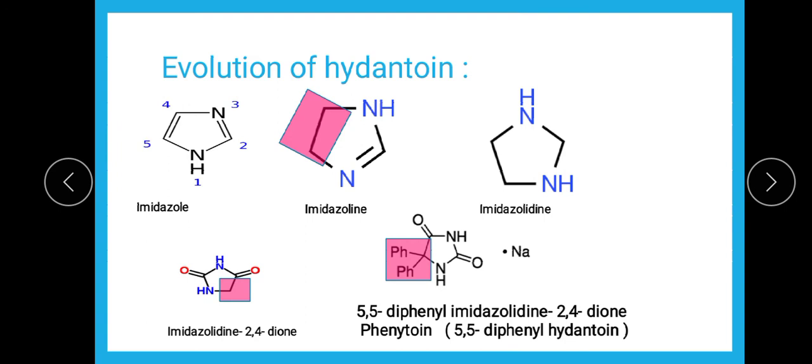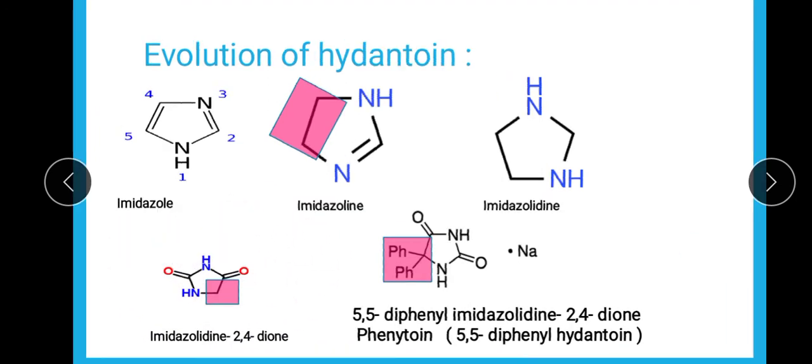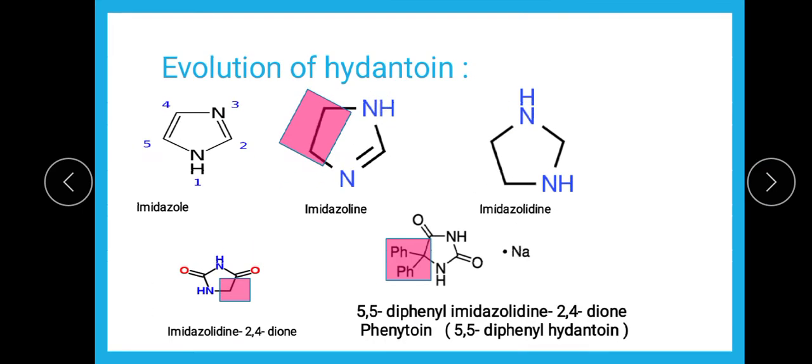Hydantoin is nothing but imidazolidine 2,4-dione. As you can see in the structure, this is imidazolidine 2,4-dione. From our previous video lectures on nomenclature and classification of heterocyclic compounds, we are able to understand 5-membered, 6-membered, and fused ring structures. The first structure you can see here is imidazole. To remember it — it is diazole, meaning 2-aza, and aza means nitrogen, so there are 2 nitrogens.